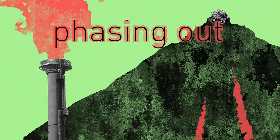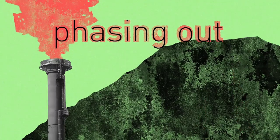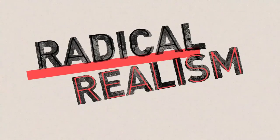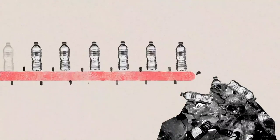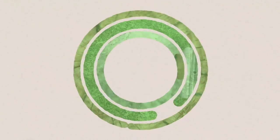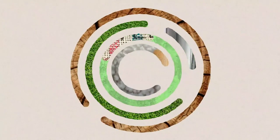Fifth, phasing out dumps, landfills and so-called waste-to-energy incinerators. Radical realism for climate justice means shifting away from linear production to zero waste societies.